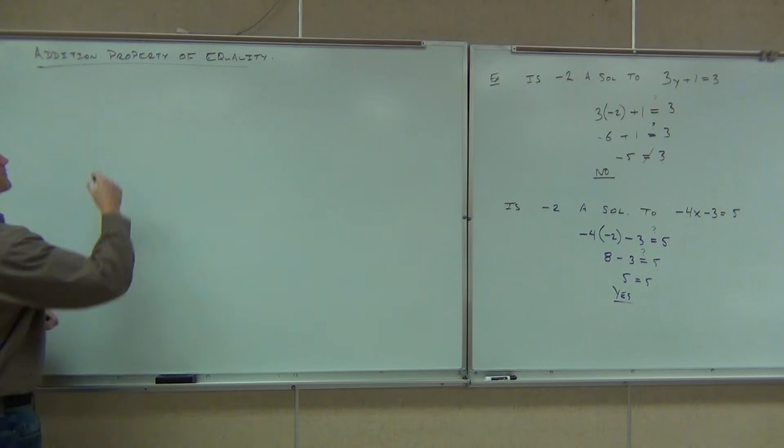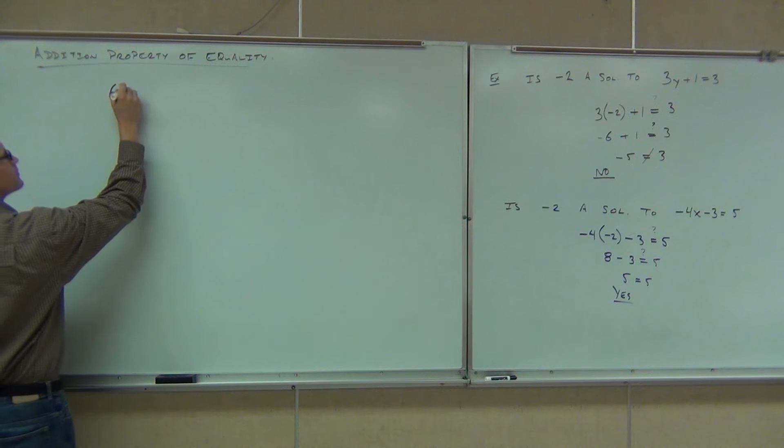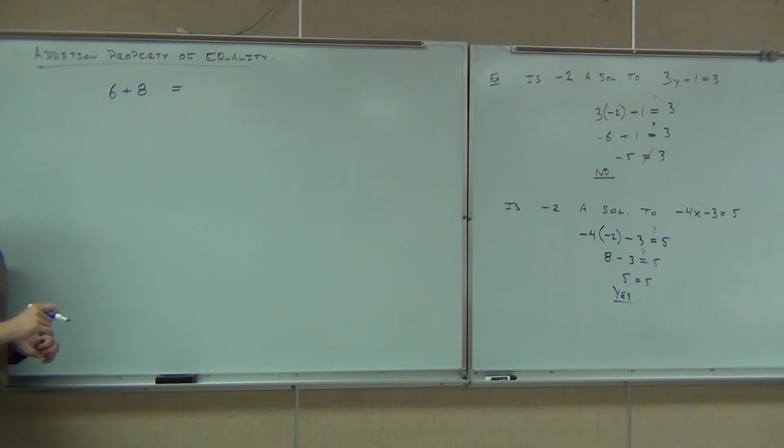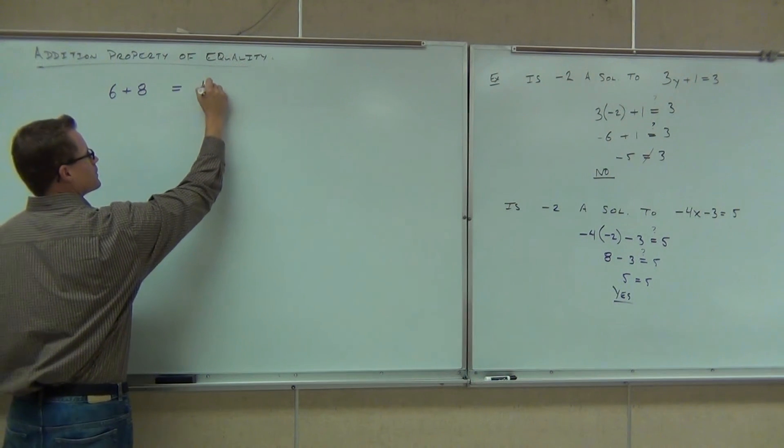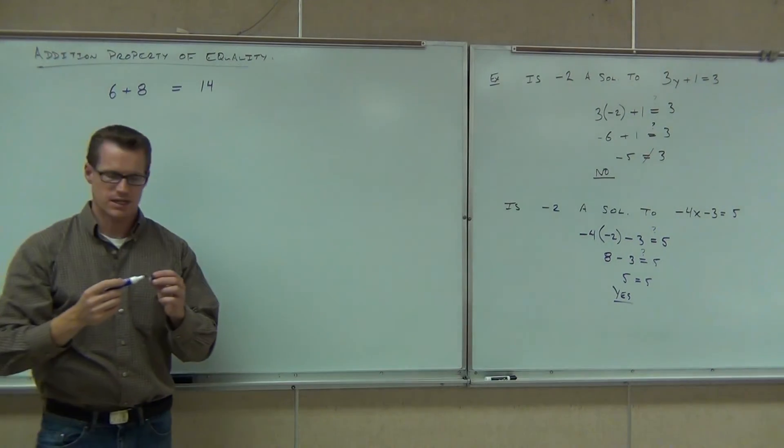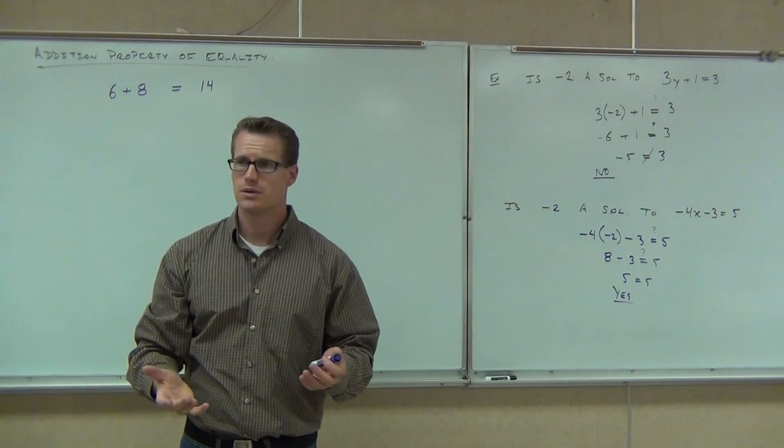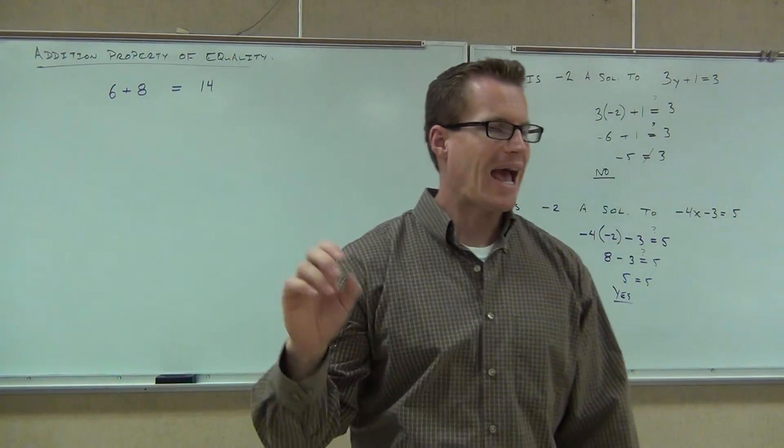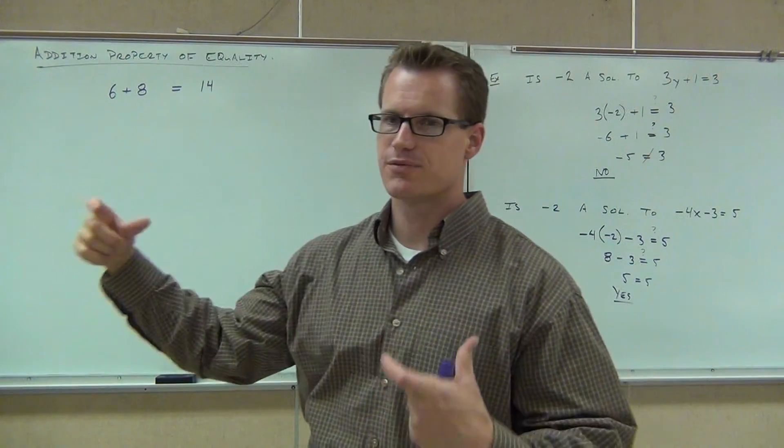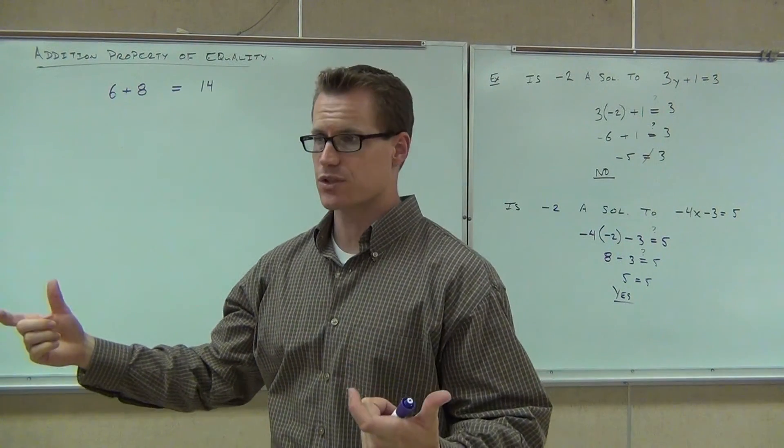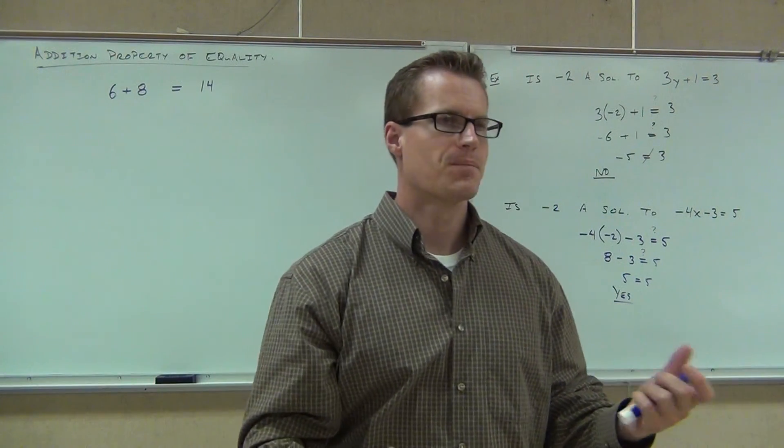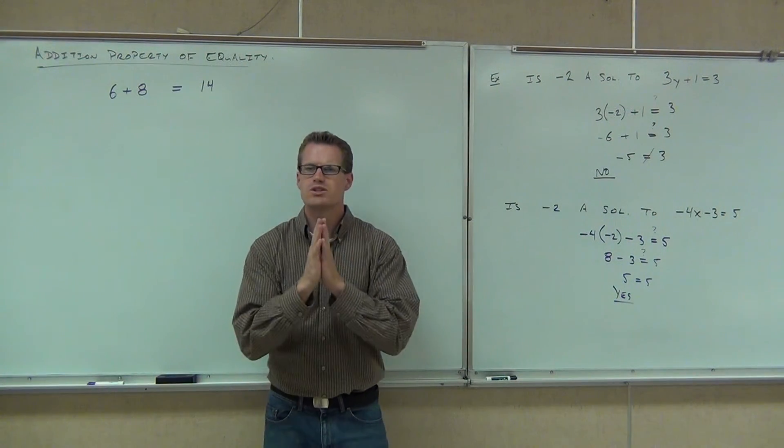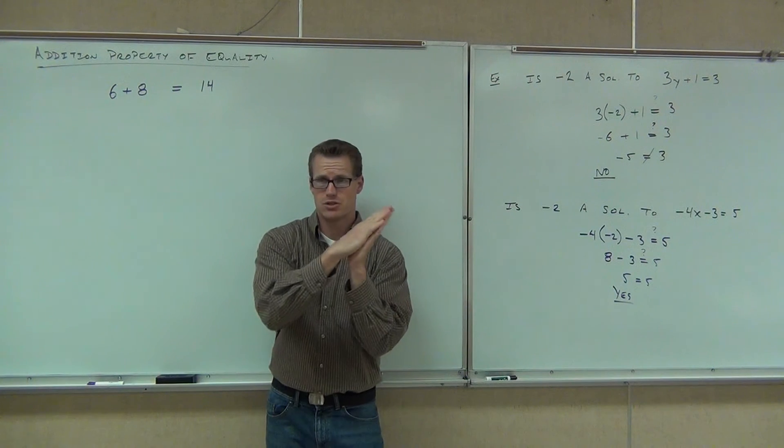The one property we have to talk about is the addition property of equality. Here's what it is. That sounds really fancy, right? The addition property of equality. It's a really simple statement and you guys are going to be like, yeah, duh, no kidding. Why are we doing this? This property, though, lets us solve all your equations. How much is 6 plus 8? 14. So you'd say that's a true statement, right? 6 plus 8 equals 14. Is that a true equation for you? Yes. Here's what the addition property of equality says. Very simple thing. It says if I add the same number to both sides of my equation, the equation is going to be equal still. What you do to one side of your equation, you have to do to the other. If you don't, it's like a teeter-totter.